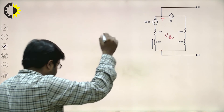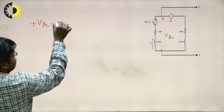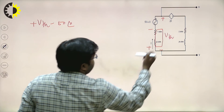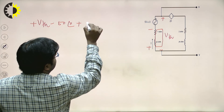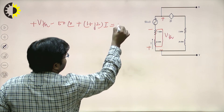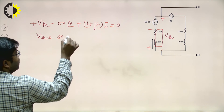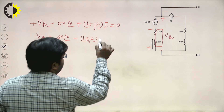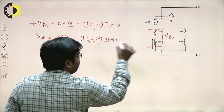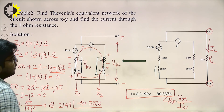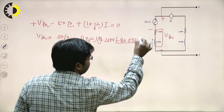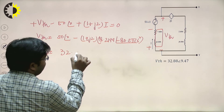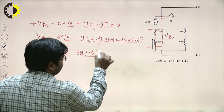Applying KVL again for V_TH: +V_TH − 50 at angle 0 + (1 + j2) × I = 0, so V_TH = 50 at angle 0 − (1 + j2) × (8.2199 at angle −80.54). After solving this equation, V_TH = 32.88 at angle 9.47 degrees.